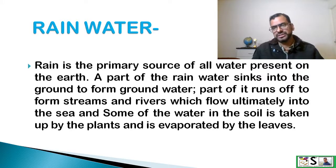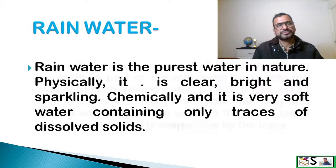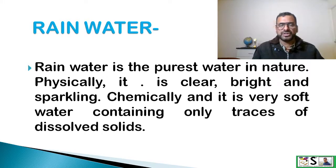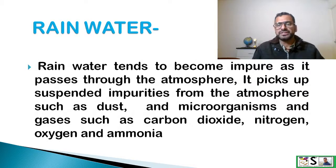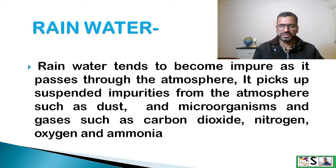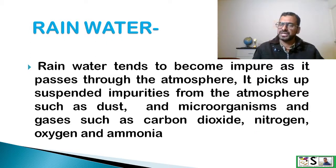Some of the water in the soil is taken by plants and is evaporated by the leaves. Rain water is the purest form in nature. Physically it is clear, bright and sparkling. Chemically it is very soft water containing only traces of dissolved solids. Rain water tends to become impure as it passes through the atmosphere, picking up suspended impurities such as dust and microorganisms, and gases such as carbon dioxide, nitrogen, oxygen and ammonia.